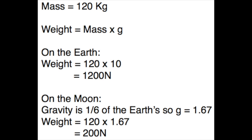For example, if you have an astronaut with a mass of about 120 kilograms, remember that his mass on the Earth and on the Moon will be the same — his mass stays the same. However, his weight will drastically vary: on Earth he will have a weight of 1200 newtons, but because gravity is so much less on the Moon, his weight will only be about 200 newtons.